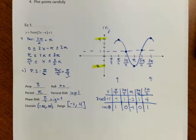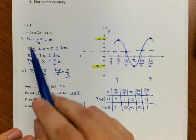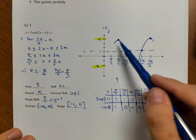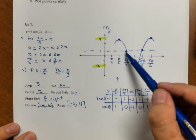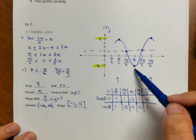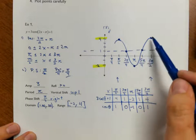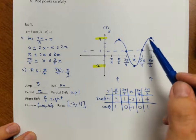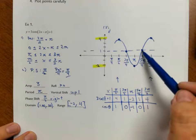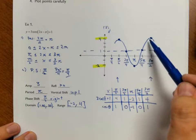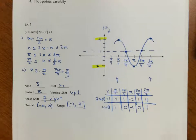Doing it this way simplifies the method of graphing. My cosine starts up high, so I start up high — then go to the middle, down to the bottom, back to the middle, all the way to the top. High, middle, low, middle, high. And then I can continue if needed.